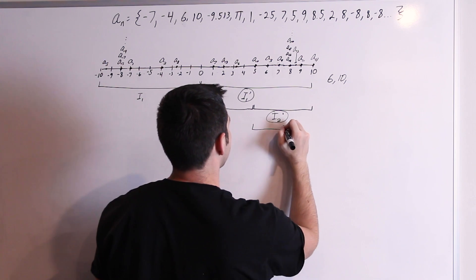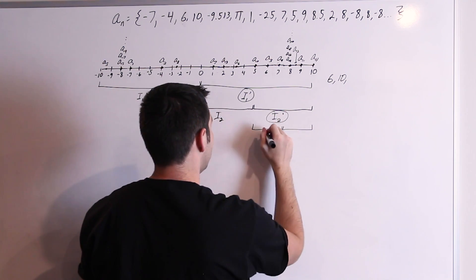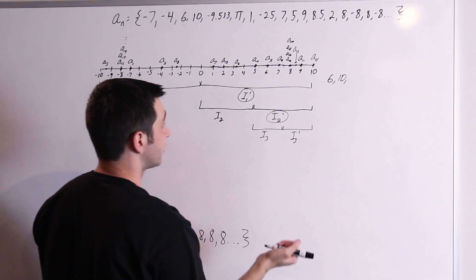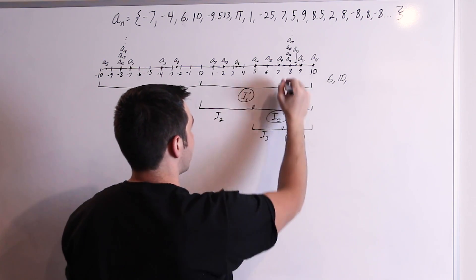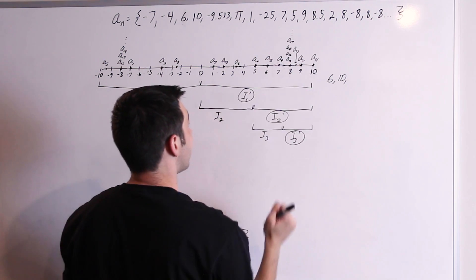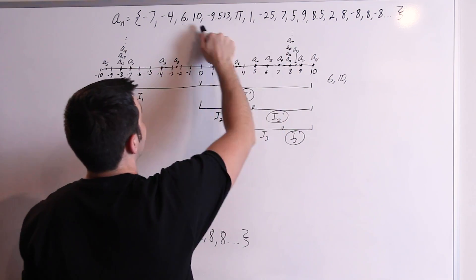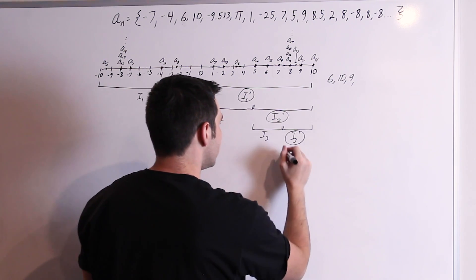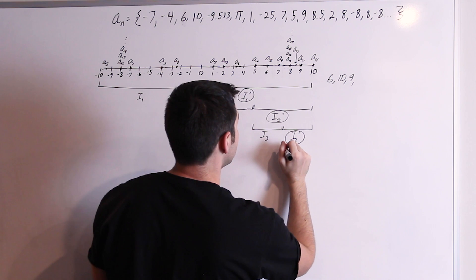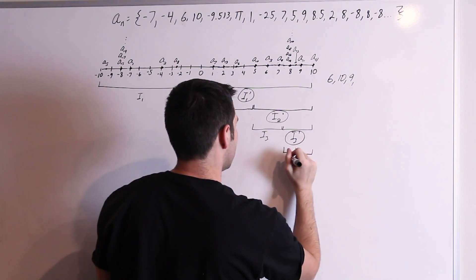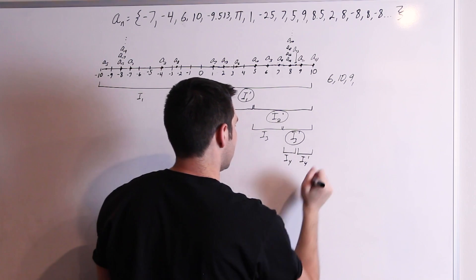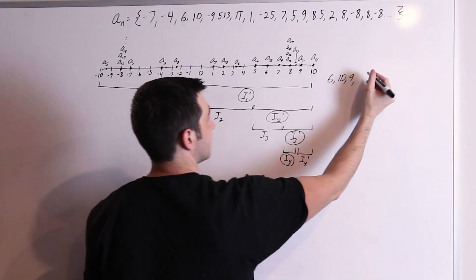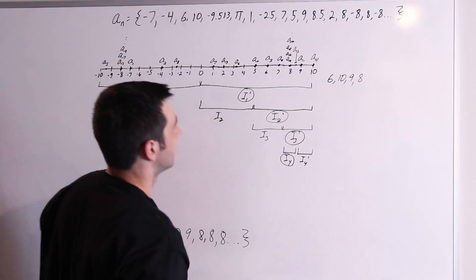Then we repeat — split I2 prime into two halves, call that I3 and I3 prime. One of those must contain infinitely many terms. In this case it's I3 prime — that's where all the 8s are. Pick a number from there: 9 is in there, and it comes after the 10, so that's the third term in our subsequence. Then do that again: split into I4 and I4 prime. In this case I4 is where infinitely many terms are — that's where all the 8s are. You pick one from there and I'll pick 8.